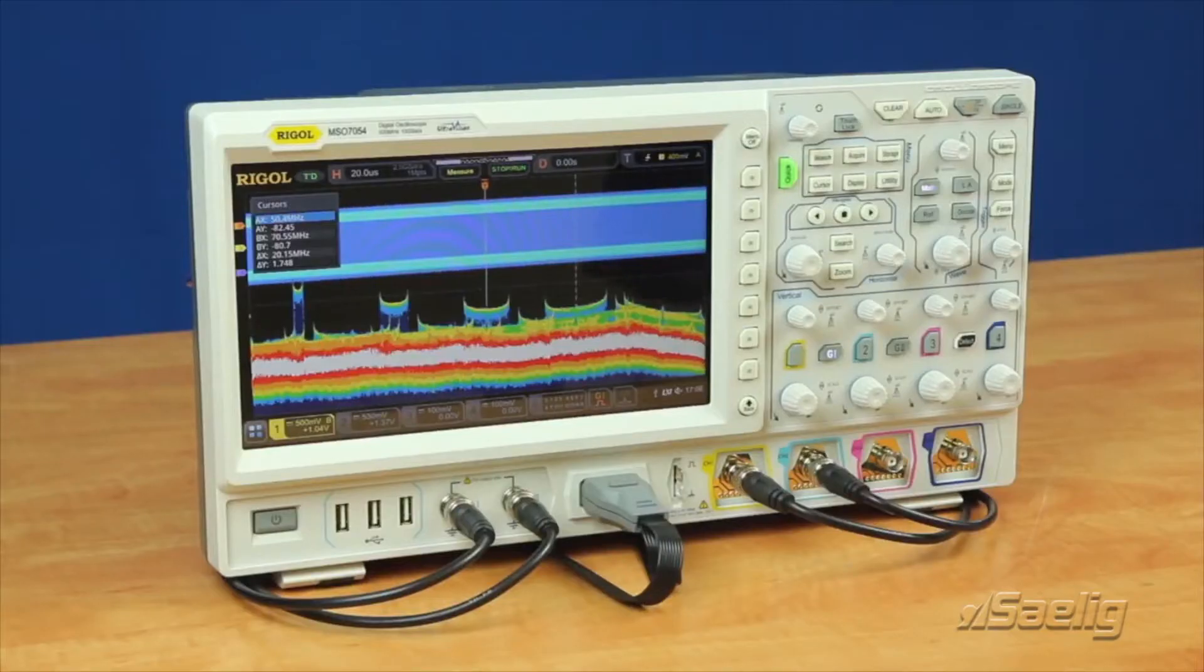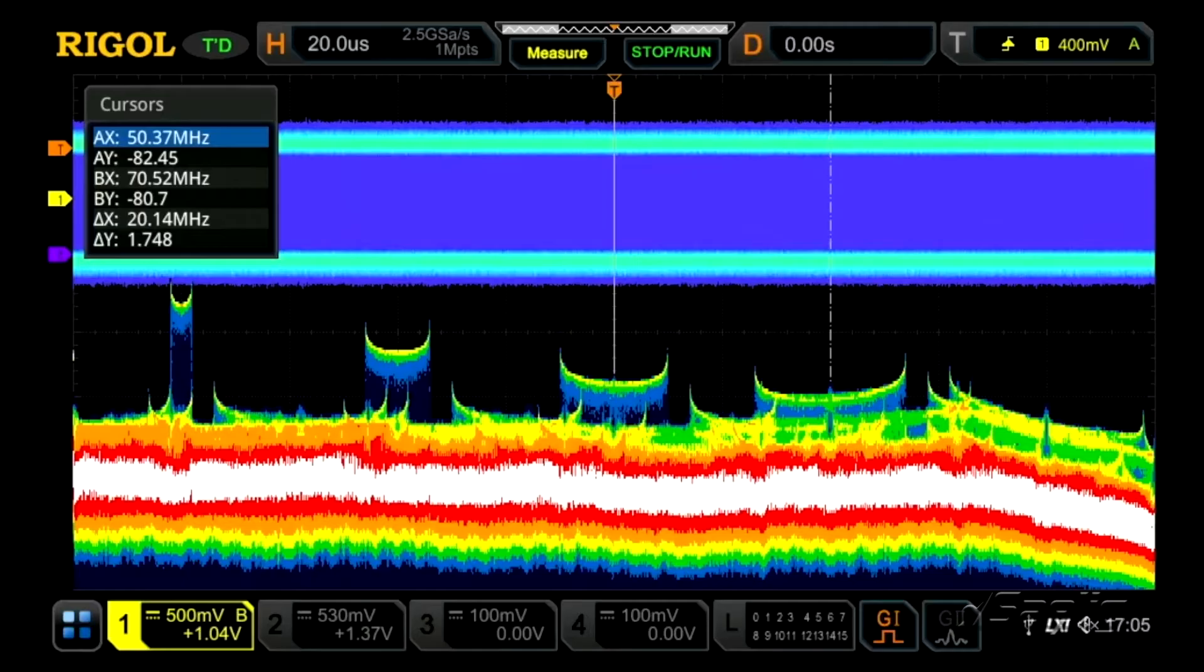Another way we can get more out of our deep memory on our 7000 series oscilloscope is with the FFT. Here we're using our enhanced FFT and doing two important things.